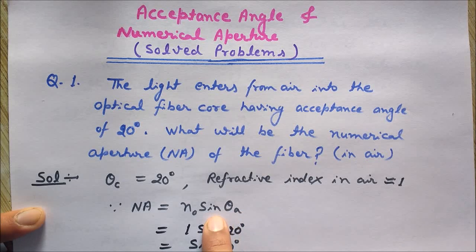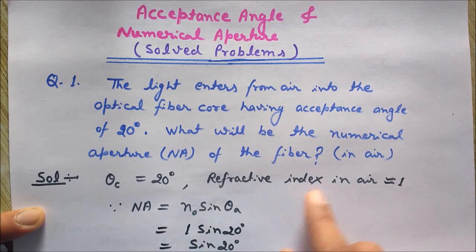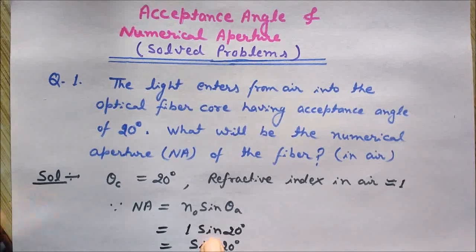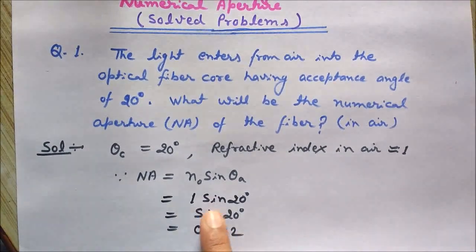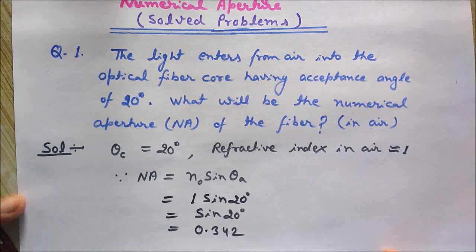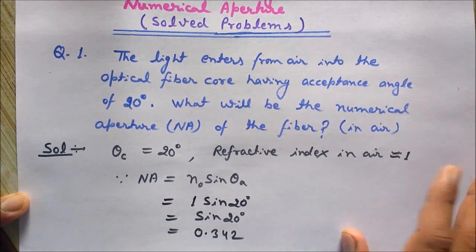So we will find the sine theta of this acceptance angle which is given here, 20 degrees, and n naught is the refractive index of the medium so it is one. So one sine of 20 degrees, one multiplied by sine 20 degrees, so it comes out to be 0.342. So the numerical aperture would be 0.342.